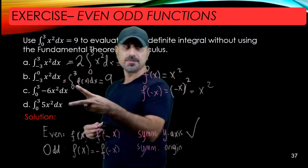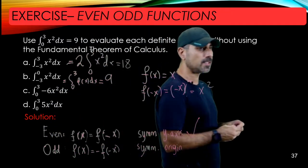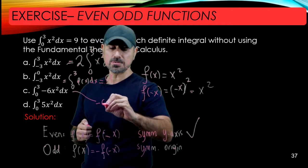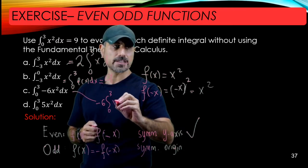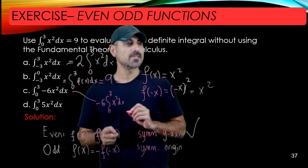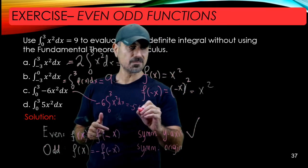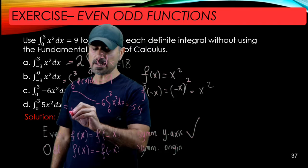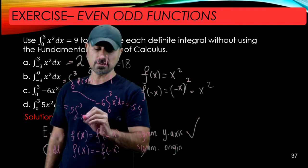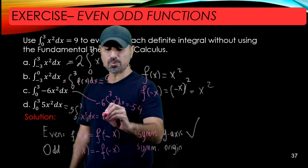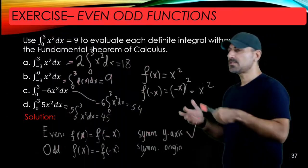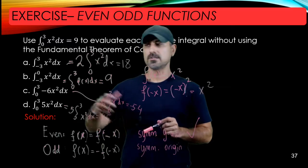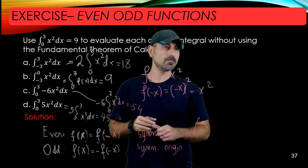Part (b) has limits -3 and 0. By the evenness of the function and symmetry, this equals the integral from 0 to 3 of f(x) dx, which is given as 9. The last two parts don't use evenness or oddness — they just use properties of integrals. Part (c) equals -6 times the integral from 0 to 3 of x² dx, and since that integral is 9, the answer is -54.